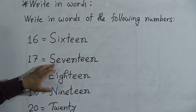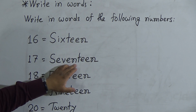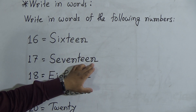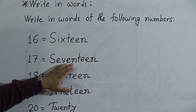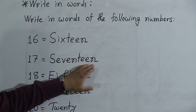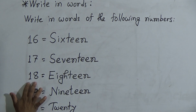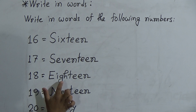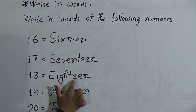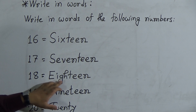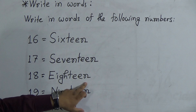The next number is 17. The spelling of 17 is S-E-V-E-N-T-E-E-N, 17. Next number is 18. The spelling of 18 is E-I-G-H-T-E-E-N, 18. You can note the double E in EIGHTEEN.